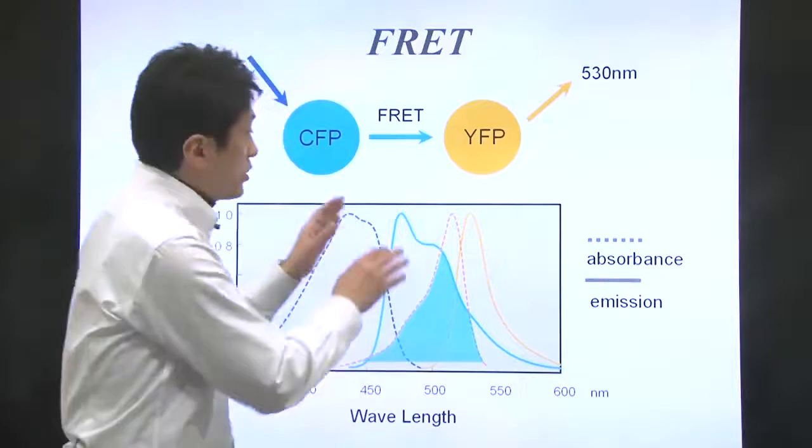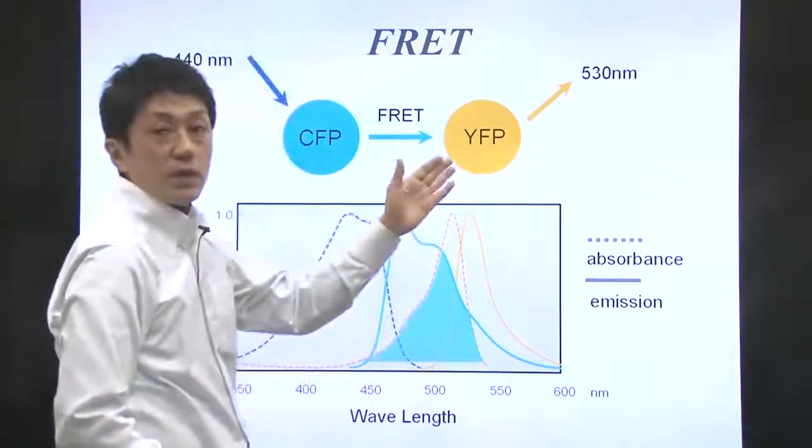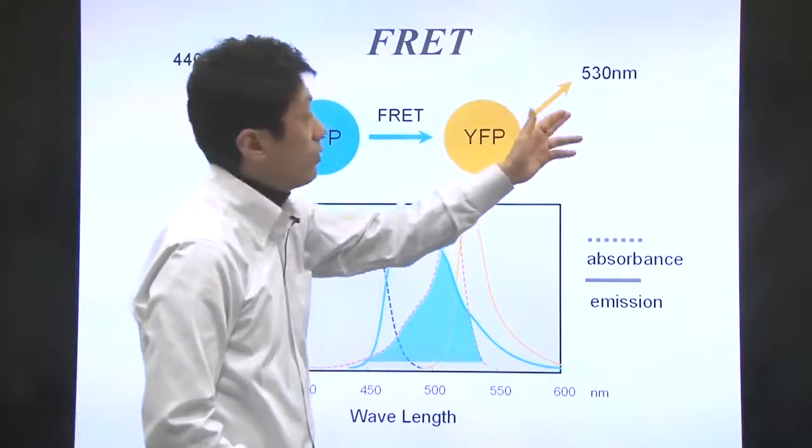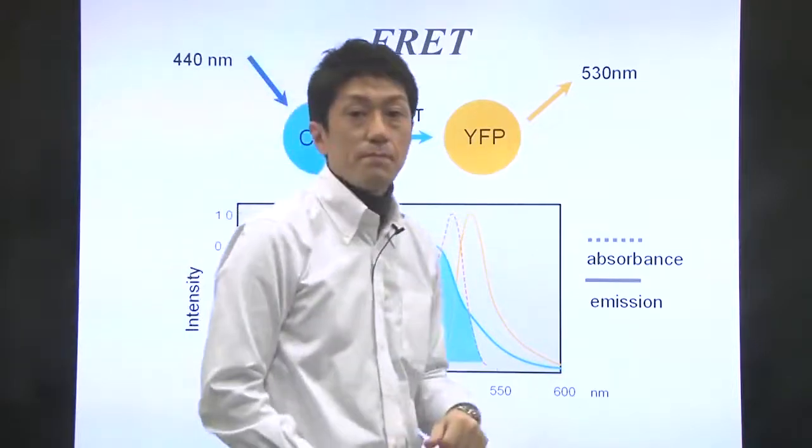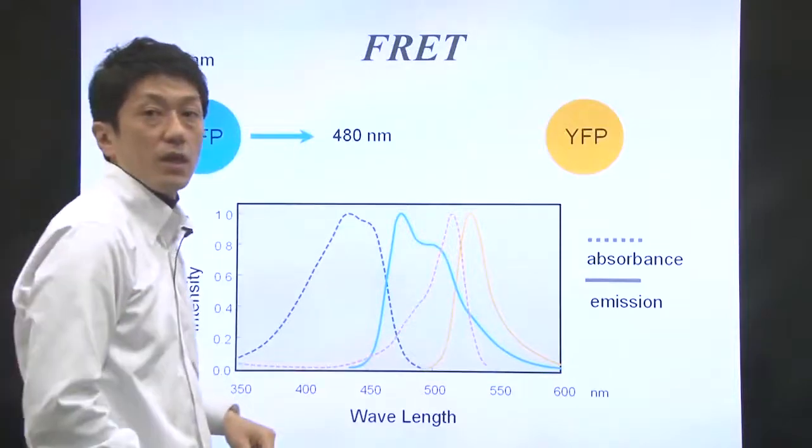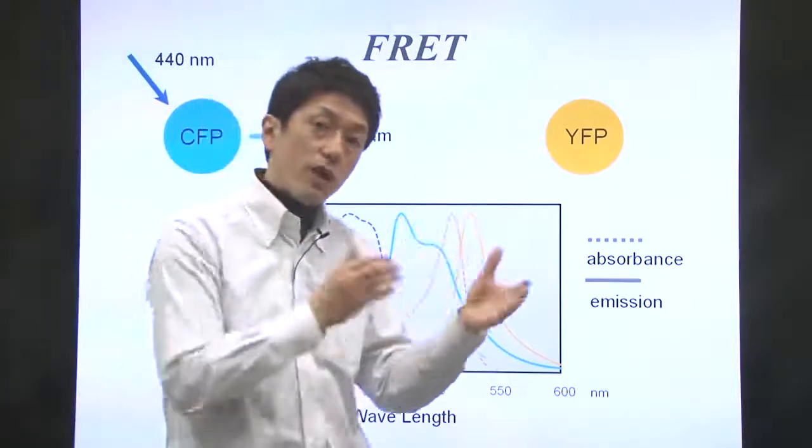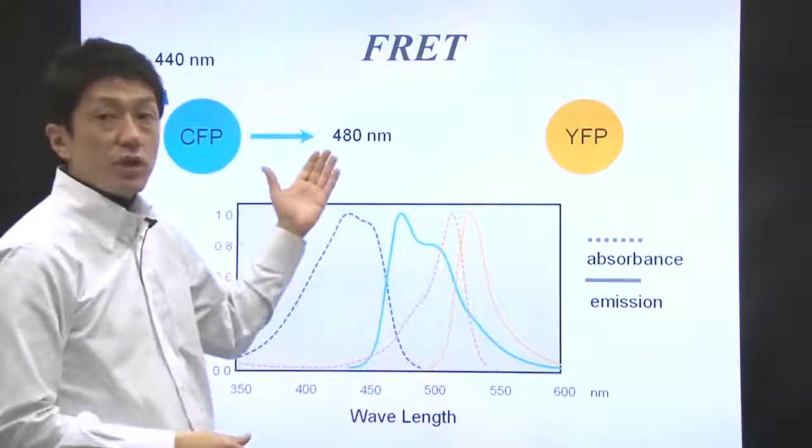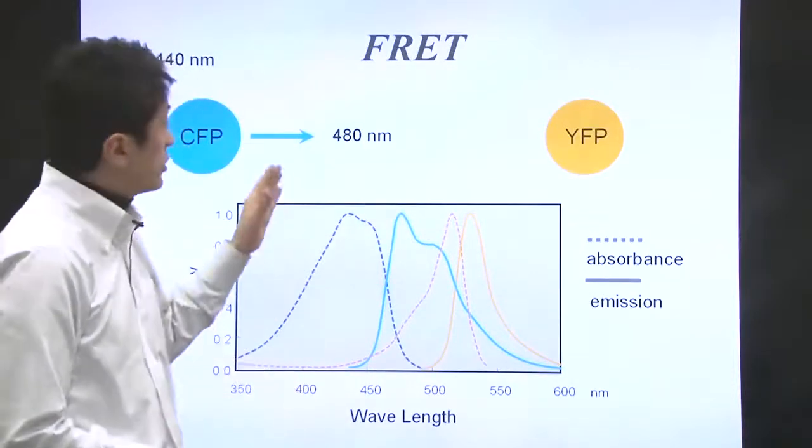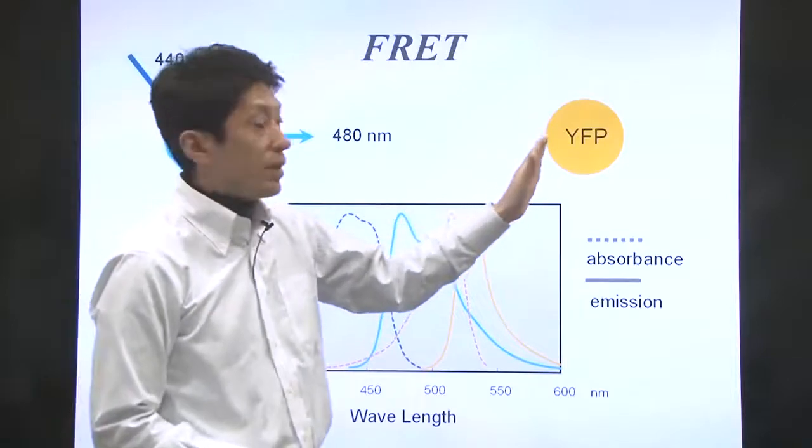The energy transferred to YFP is emitted as yellow fluorescence at 530 nm. When these two proteins are located far away, the energy transfer no longer happens.